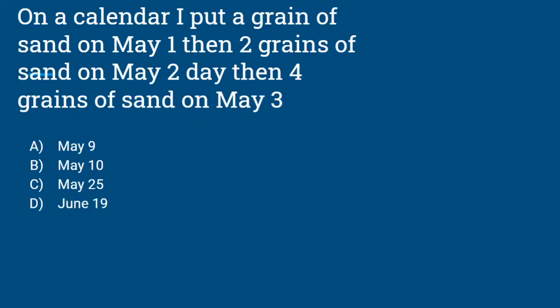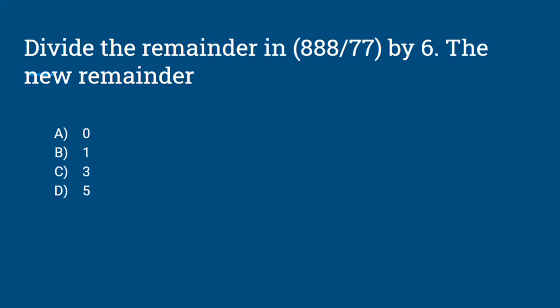Now I want you guys to try both of these questions and put your answers in the comments below. The first one is: on a calendar, I put a grain of sand on May 1st, then 2 grains of sand on May 2nd, then 4 grains of sand on May 3rd. We want to figure out what day it would be when you have 500 grains of sand in total. The second question is: divide the remainder in 888 divided by 77 by 6. The new remainder is A) 0, B) 1, C) 3, or D) 5. Put your answers in the comments below, and I'll see you guys in the next video. Bye!